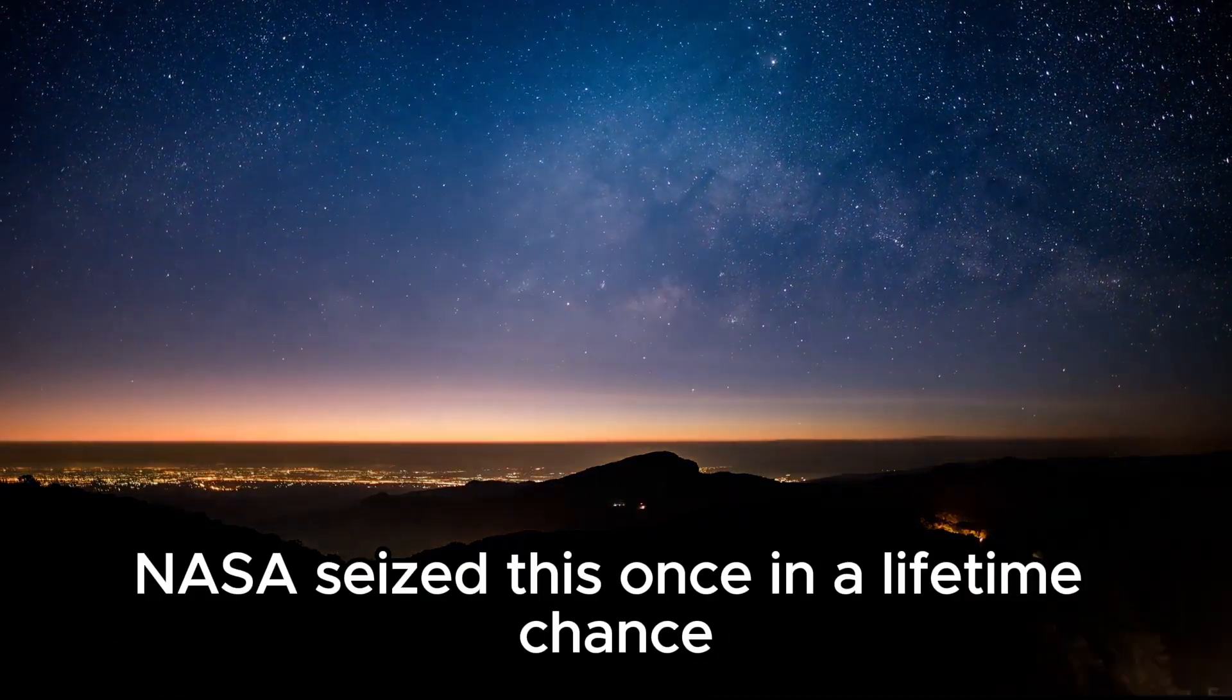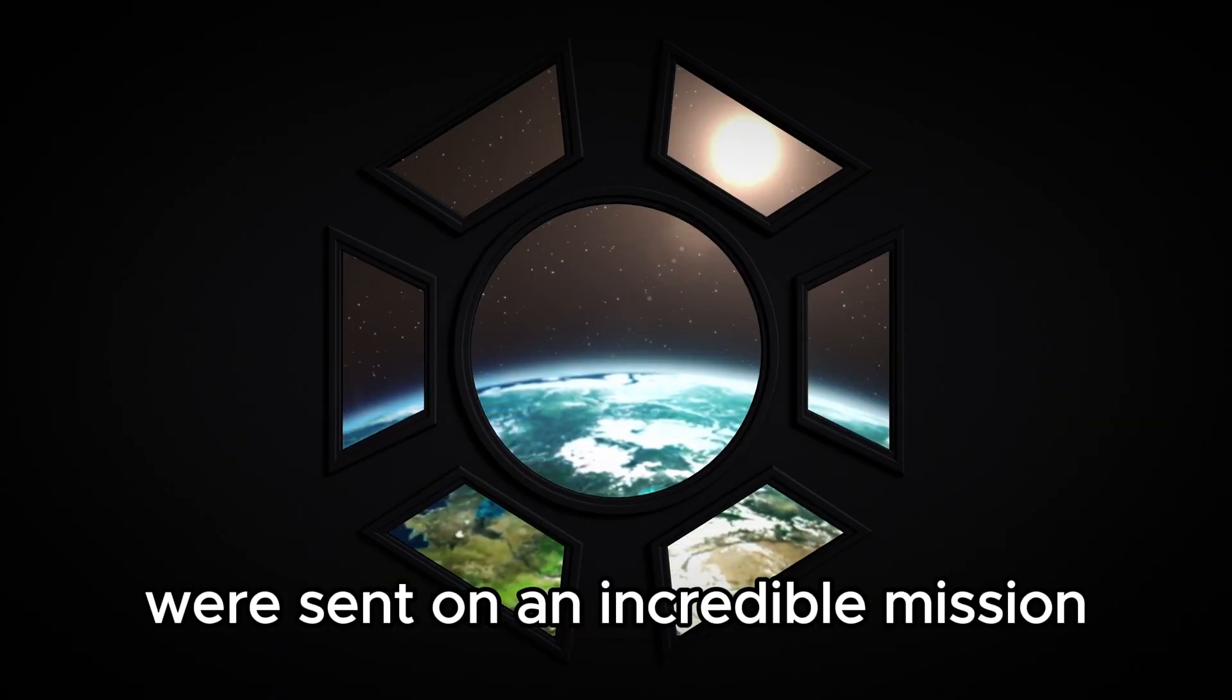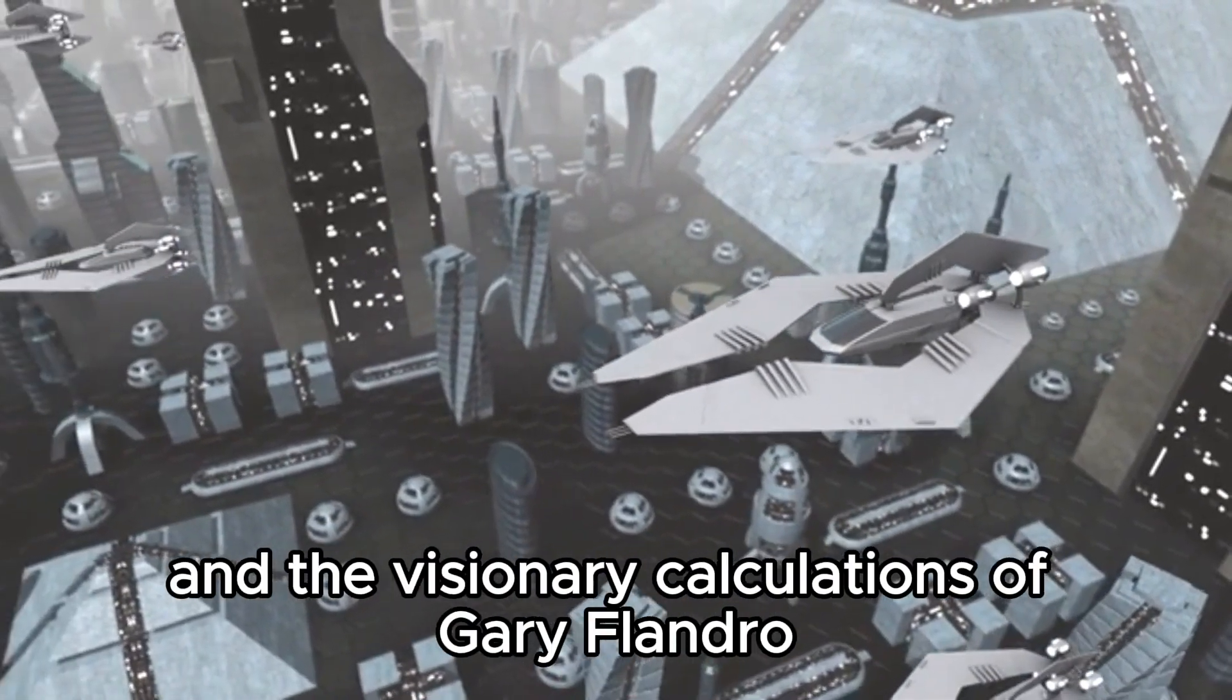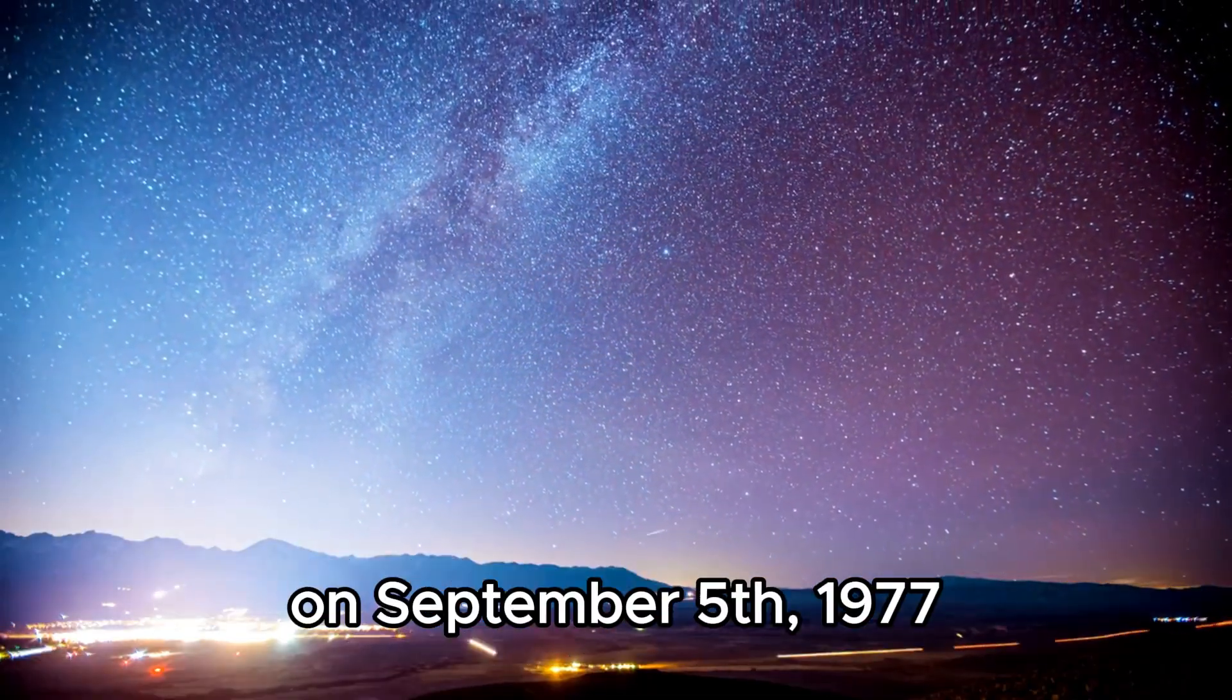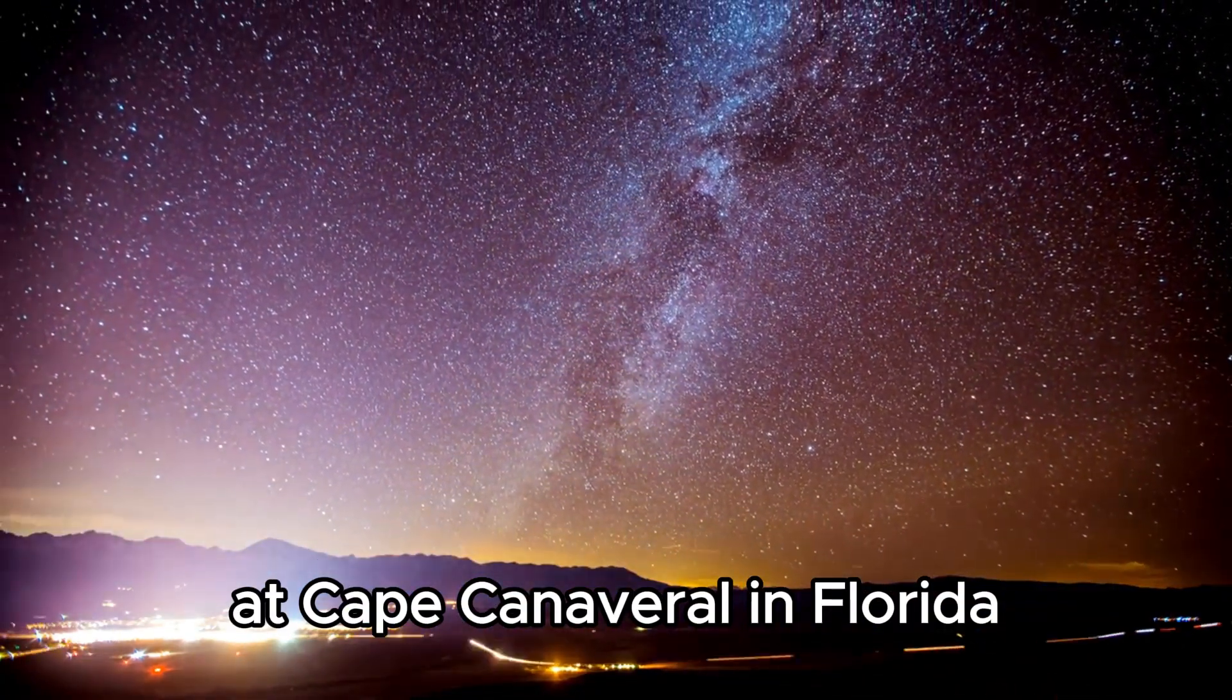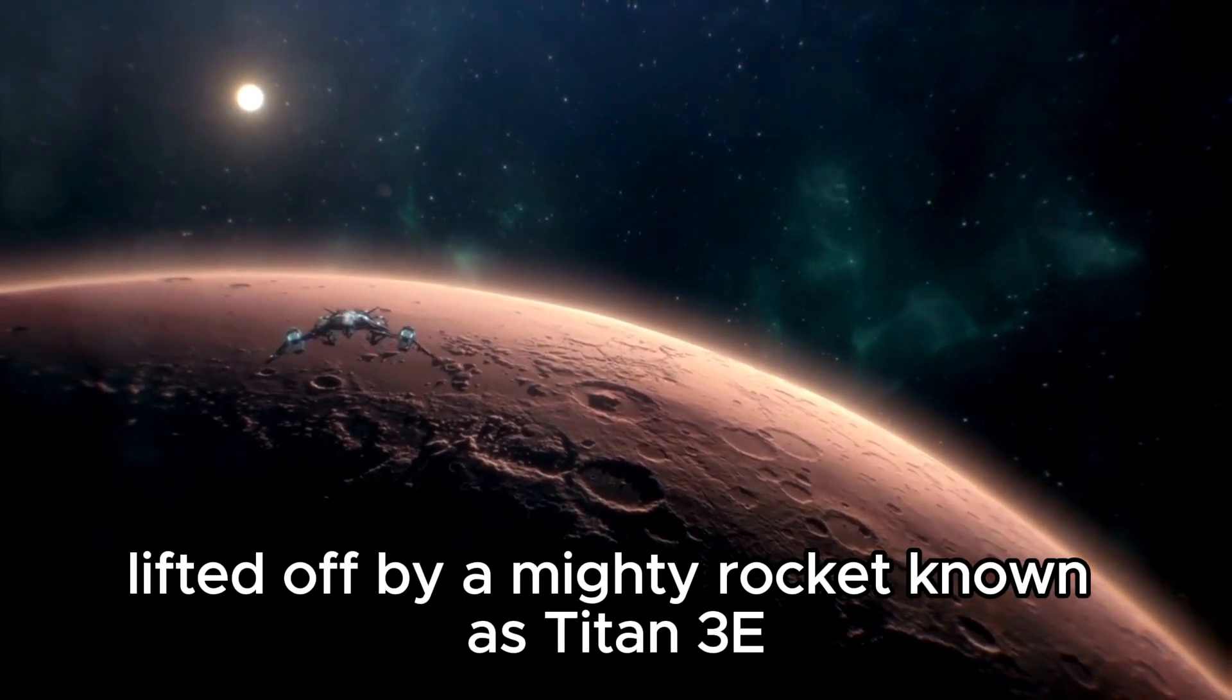NASA seized this once-in-a-lifetime chance and built two spacecraft to make the journey. The spacecraft Voyager 1 and Voyager 2 were sent on an incredible mission to explore the outer planets of our solar system. Thanks to the alignment of the planets and the visionary calculations of Gary Flandro, the launch of the Voyager twin probes on September 5th, 1977, marked something truly incredible. Voyager 1 embarked on its epic journey into space, lifted off by a mighty rocket known as Titan 3E or Centaur.